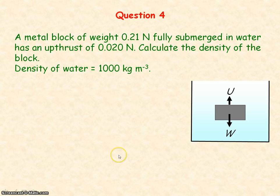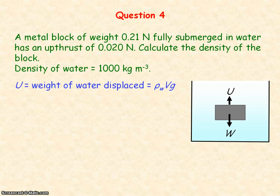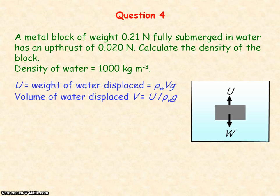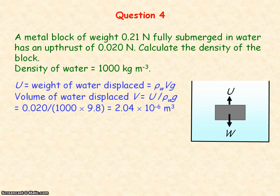For question 4, we can use the information from question 3 to determine the density of the metal block. Using Archimedes principle, where upthrust is equal to the weight of the water displaced, we can find the volume of the water displaced, which equals the upthrust divided by the density of water divided by g. Substituting in those values, we get the volume of water displaced equal to 2.04 times 10 to the minus 6 metres cubed.